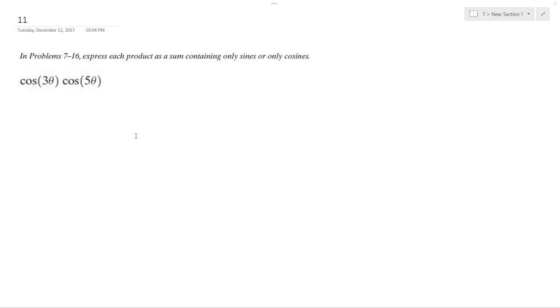To solve this problem, we want to convert the product into a sum. This is the equivalent of cosine alpha times cosine beta, which you can rewrite as one-half of cosine of alpha minus beta plus cosine of alpha plus beta. My alpha will be 3 theta, my beta will be 5 theta.